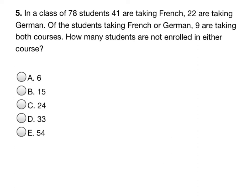Okay, in a class of 78 students, 41 are taking French, 22 are taking German. Of the students taking French or German, 9 are taking both courses. How many students are not enrolled in either course?